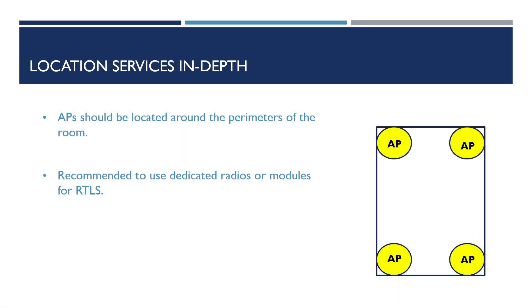Unlike traditional Wi-Fi designs, when designing networks for location services it's recommended to place the APs at the perimeter of the room as shown in the example here. In addition to this it's also recommended to dedicate radios or modules to location services. This is to avoid mass channel overlap with the amount of additional APs required to perform accurate location services.